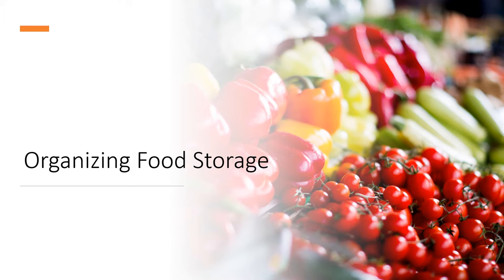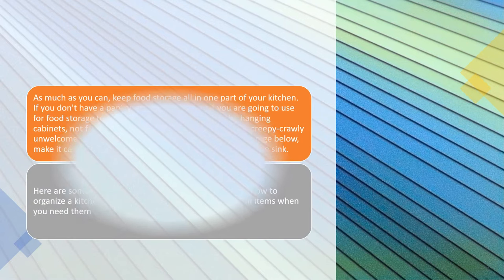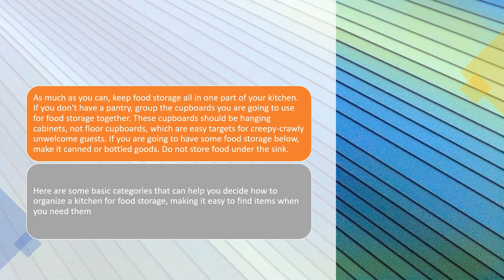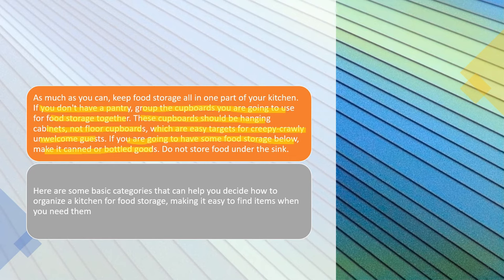Organizing food storage. As much as you can, keep food storage in all one part of your kitchen. If you don't have a pantry, group the cupboards you are going to use for food storage together. These cupboards should be hanging cabinets, not floor cupboards, which are easy targets for creepy-crawly unwelcome guests. If you are going to have some food storage below, make it canned or bottled goods.